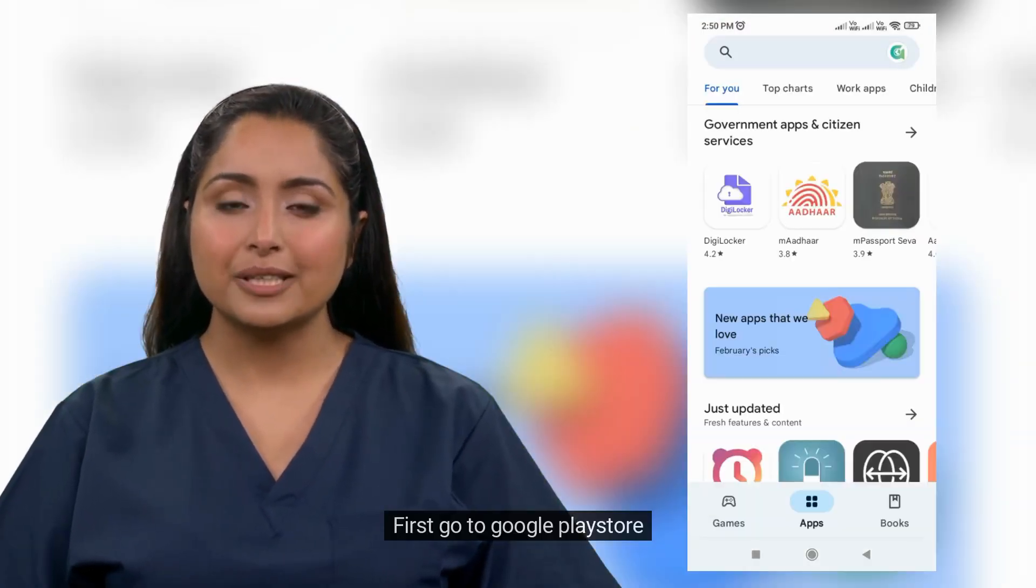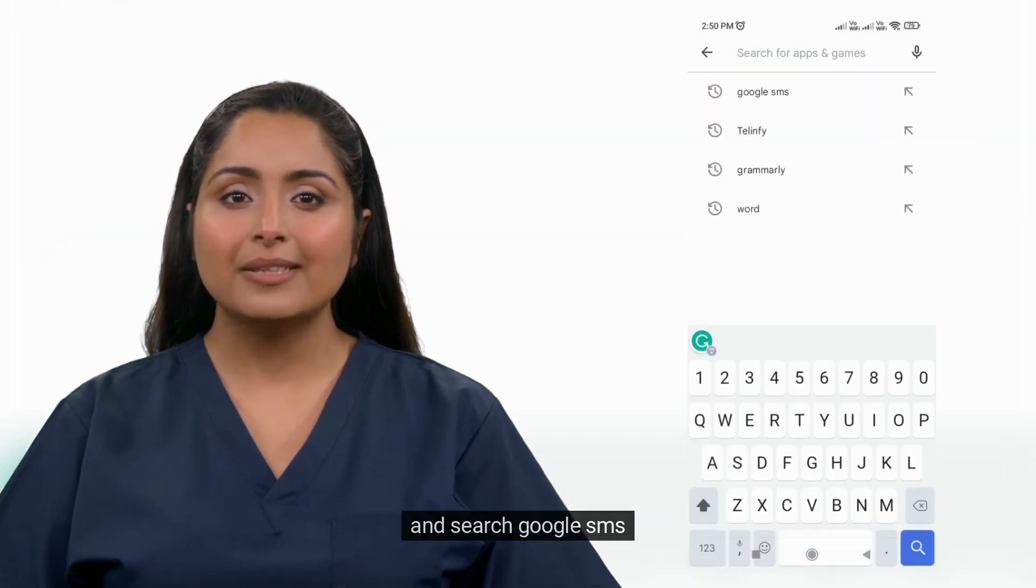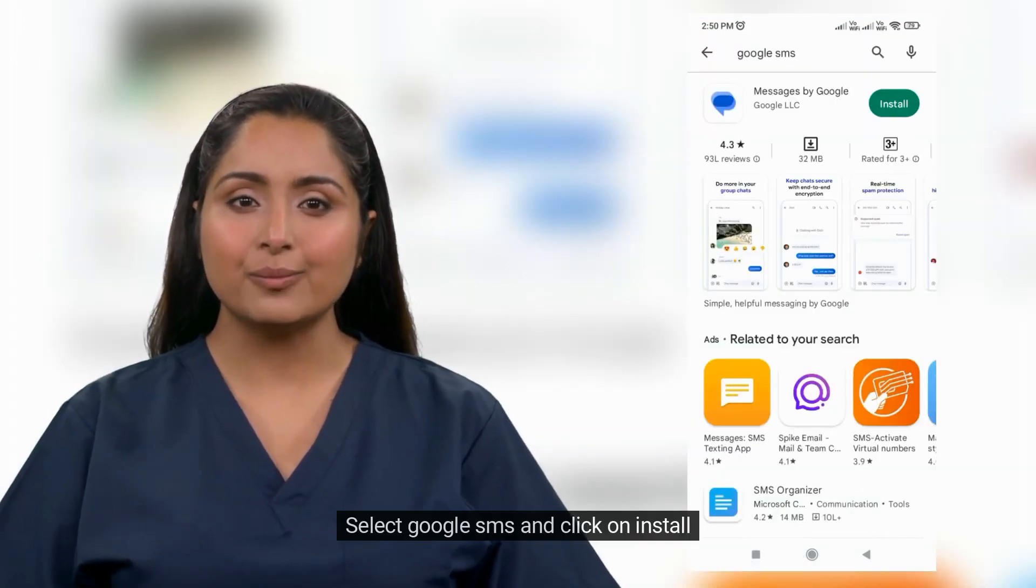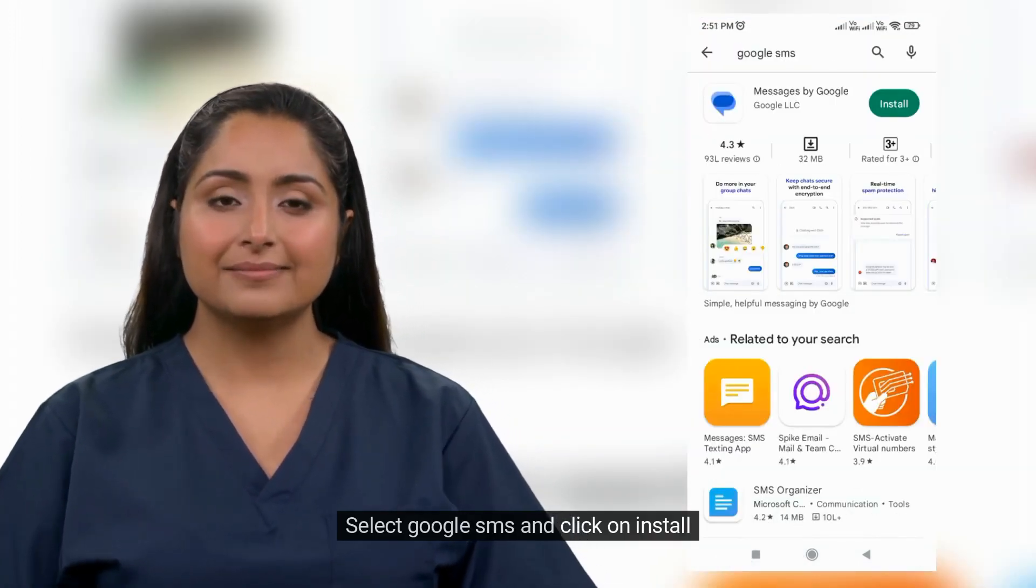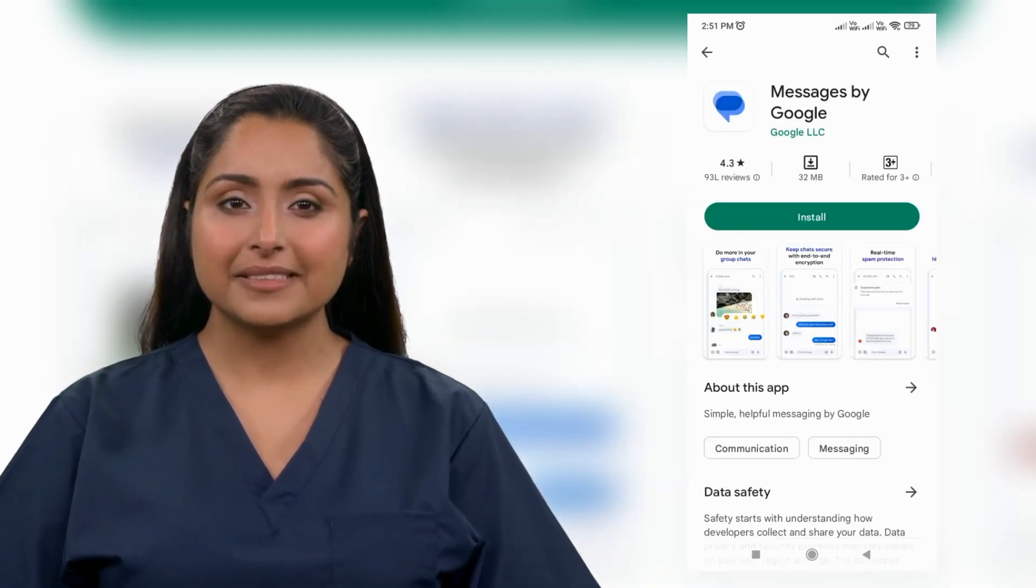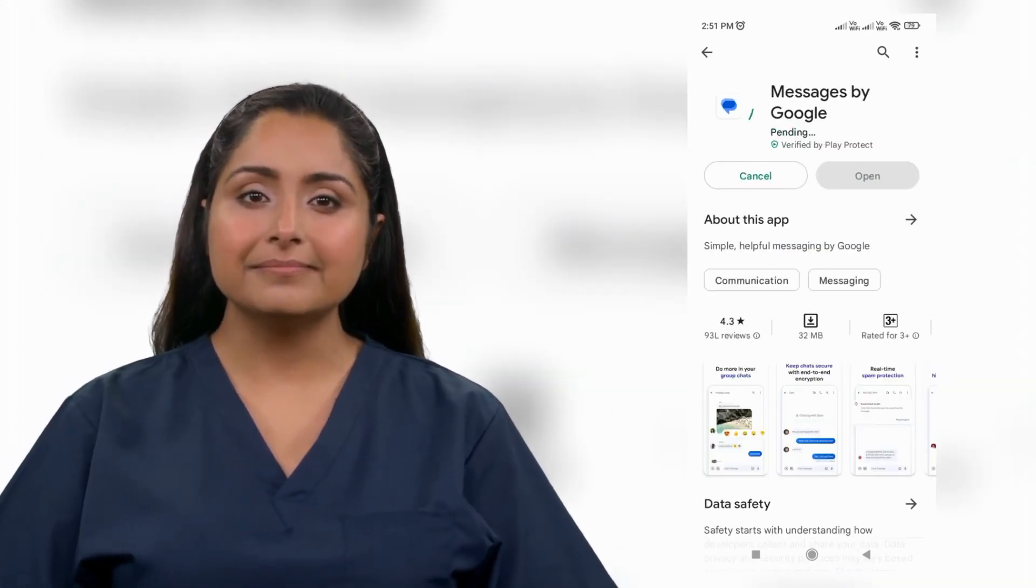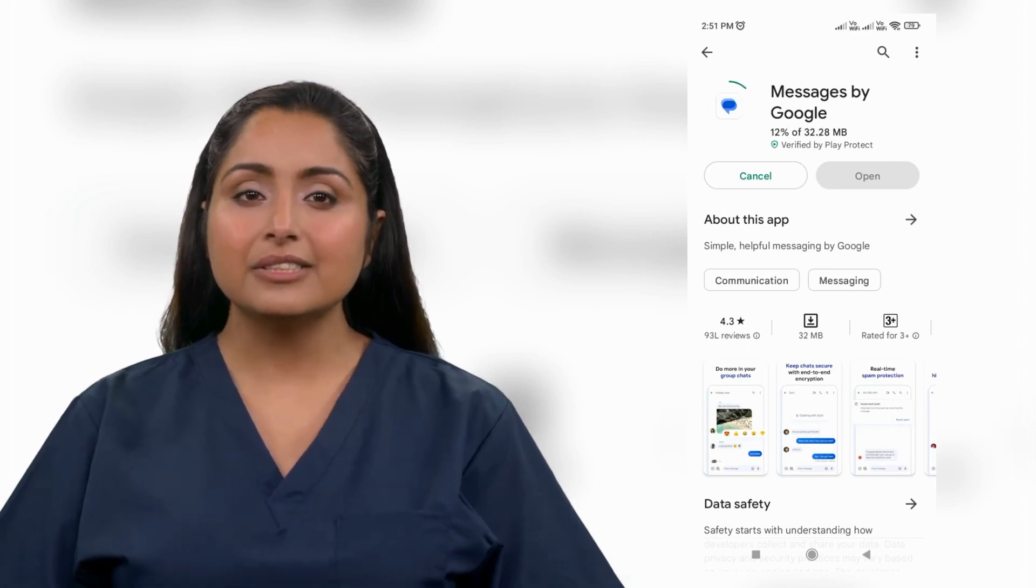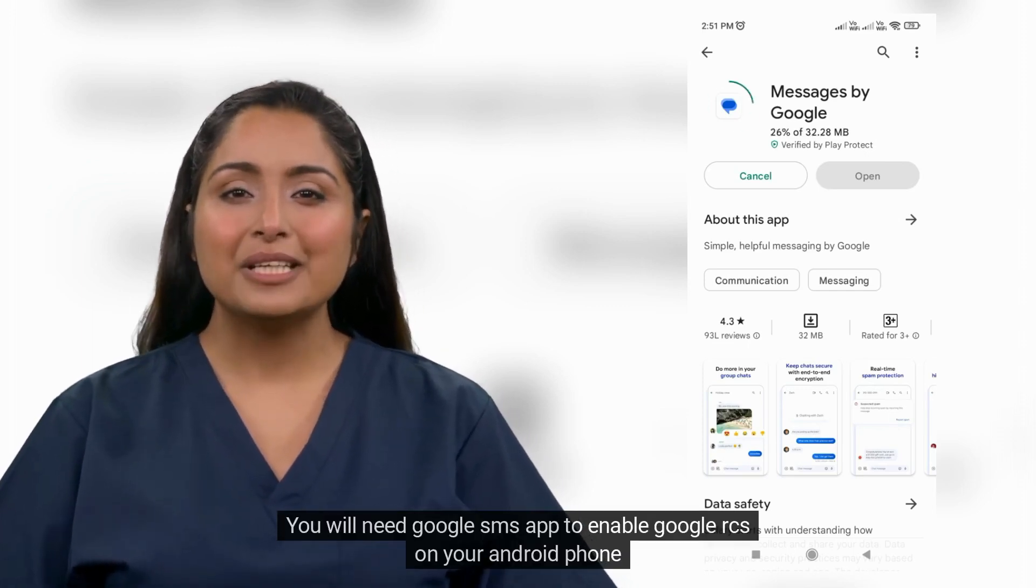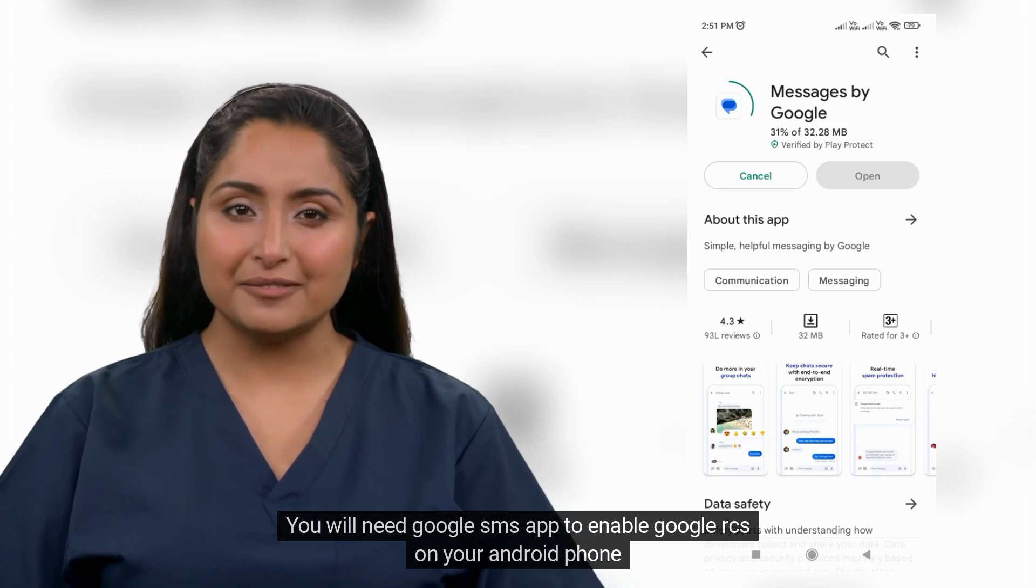First, go to Google Play Store and search for Google SMS. Select Google SMS and click on Install. Please wait for the process to complete. You will need the Google SMS App to enable Google RCS on your Android phone.